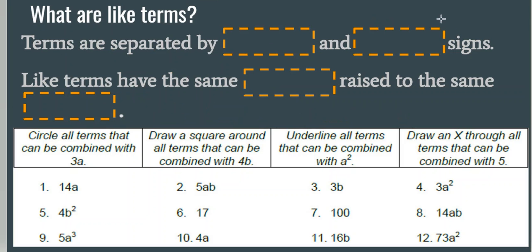So you might be thinking to yourself, what are terms and what are like terms? Well, terms are in algebraic expressions or equations and they're separated by plus and minus signs. Anything that has a plus or subtraction sign in front of it is a term. Like terms have the same variable raised to the same power. So for example, let's say I had 2x, I had negative 4x, and I had 5x squared. I'm looking for like terms, which means they have the same variable and the same exponent.